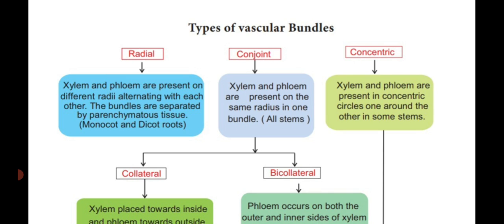First, radial vascular bundle: xylem and phloem are arranged in different radii and also alternating with each other — that means one xylem, one phloem alternating — arranged in many or different radii. The xylem and phloem bundles are separated by parenchymatous tissue. Example: monocot and dicot root.